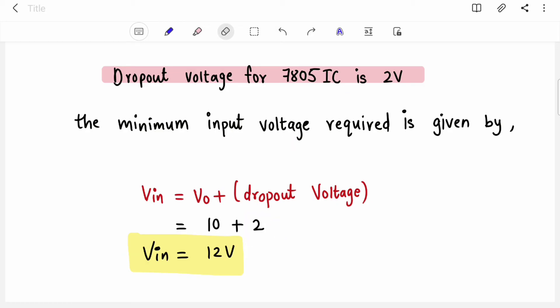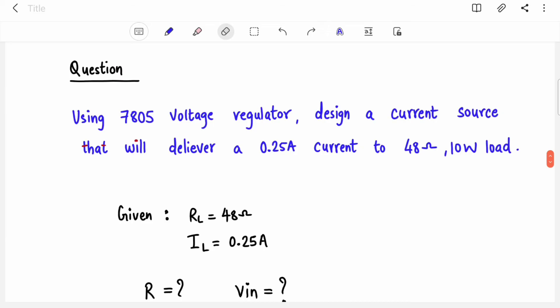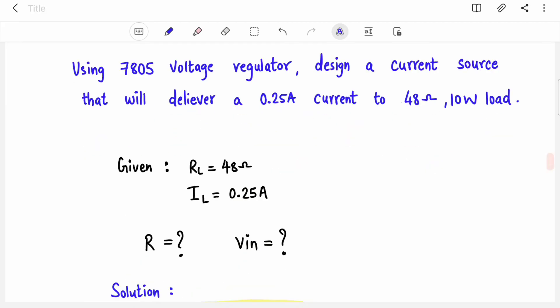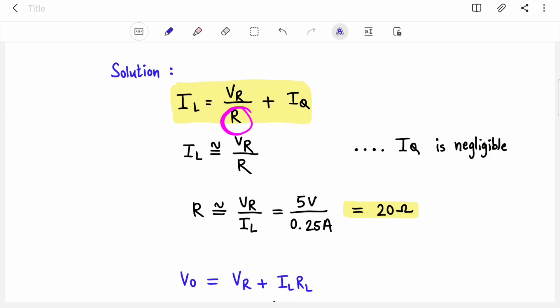So the question is: using 7805 voltage regulator, design a current source that will deliver 0.25 ampere current to 48 ohms 10 watts load. So here you have given RL is 48 ohms and IL is 0.25 ampere. So current of 0.25 ampere is flowing through this load of 48 ohms. Now we have to design means we have to find out the missing components. So what is the missing component? Value of R and what will be the minimum input voltage required. That also we need to find out.